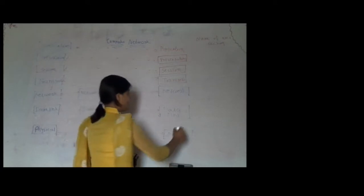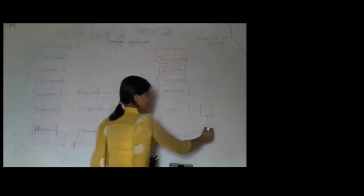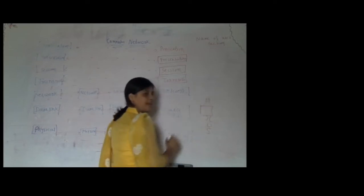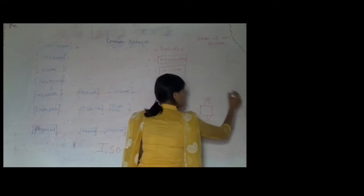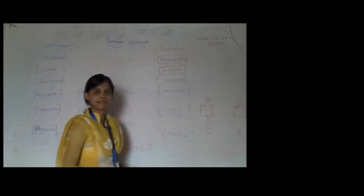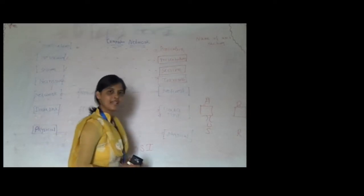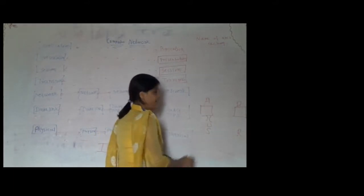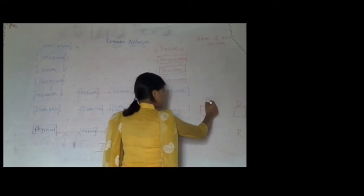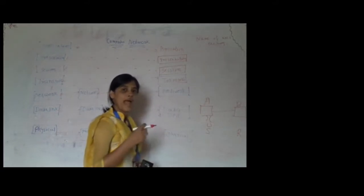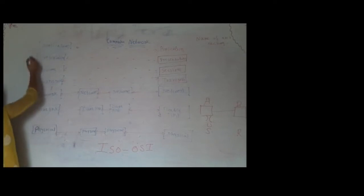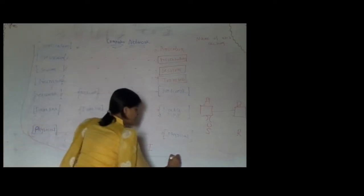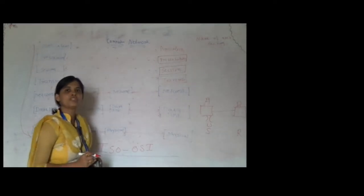Basically, what happens in communication? There is one sender operating on machine A and there is a receiver operating on another machine, machine B. When a user on machine A creates a message, that message has to pass from machine A to machine B. The message will pass layer by layer from top to bottom at the sender side. Then physically, this data has to be transmitted from one location to another location using a physical medium.